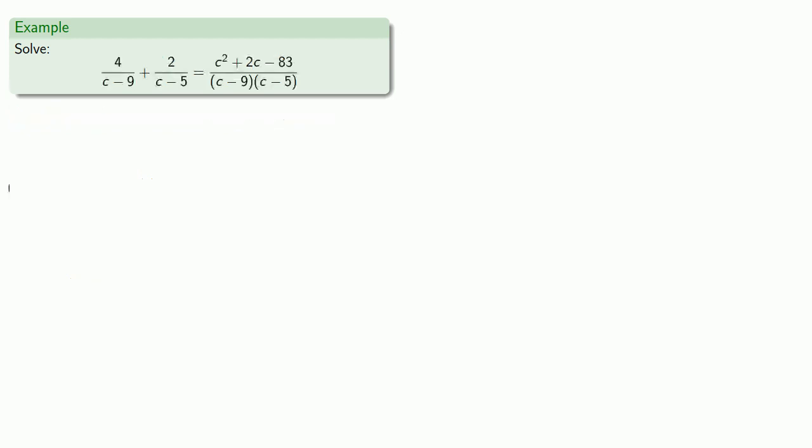It's important to remember that a forbidden value can never be a solution. So when we have an equation involving rational expressions, we should always start by finding the forbidden values.